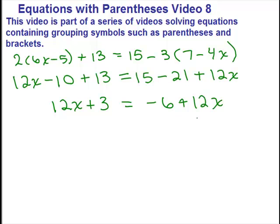If I try to get the variables on one side and constants on the other, how about if I subtract 12X from both sides? And how about if I put the constants on the other side, if I subtract 3 from both sides?